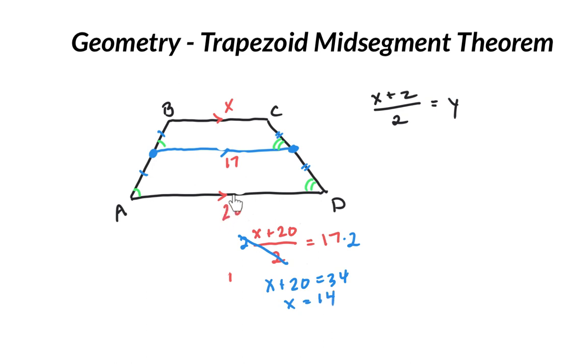This was 20, and this was 3 units smaller—3 units smaller again would be that 14. So again, there's some algebra we can do here and some good problems we can do with the trapezoid midsegment theorem.